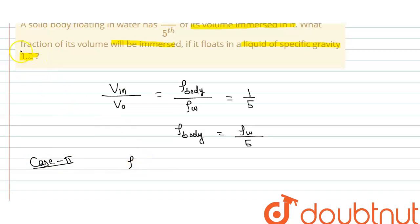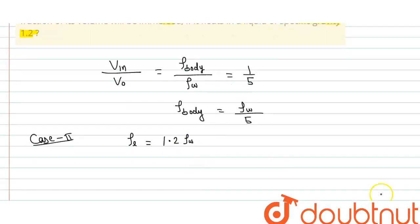Because specific gravity is 1.2, specific gravity means ratio density of liquid upon density of water. So density of this liquid is 1.2 into density of water. Now we have to find volume inside upon total volume in this case.